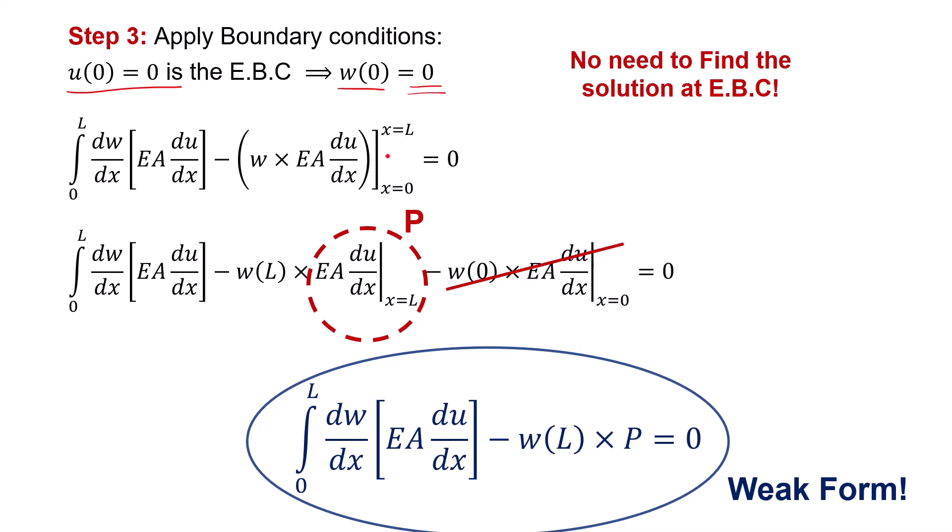Now let's go back to the expression we got from the integration by parts. At x equal to L, we have a boundary term w(L) times EA du/dx at x equal to L. And from the strong form, we know that EA du/dx is equal to P, or basically the applied force.